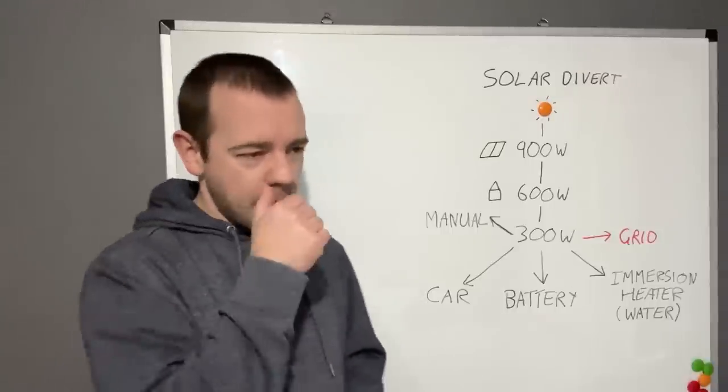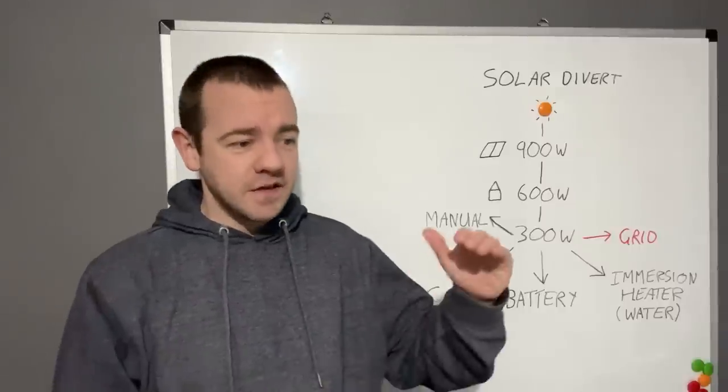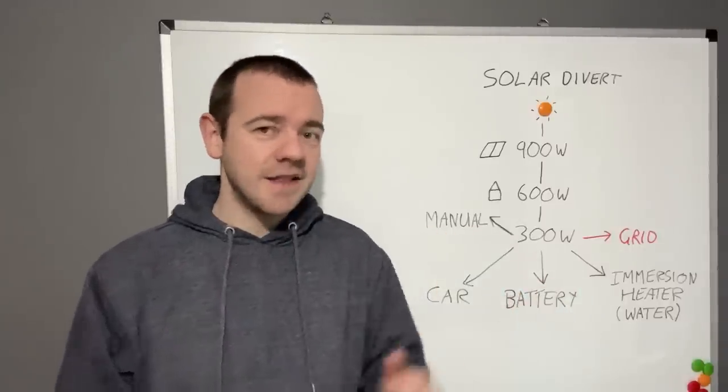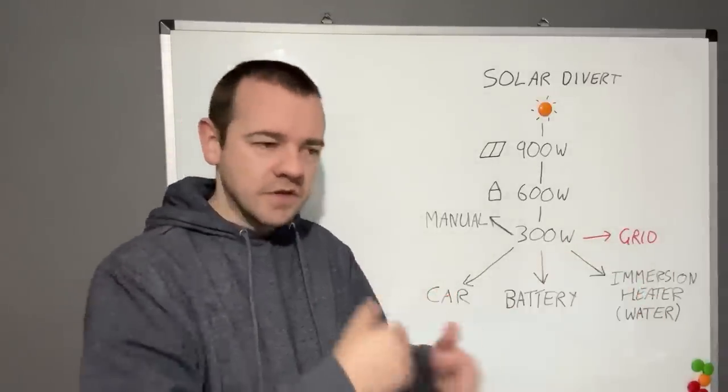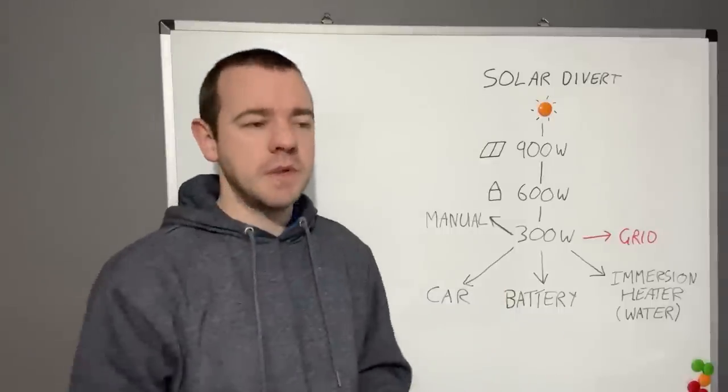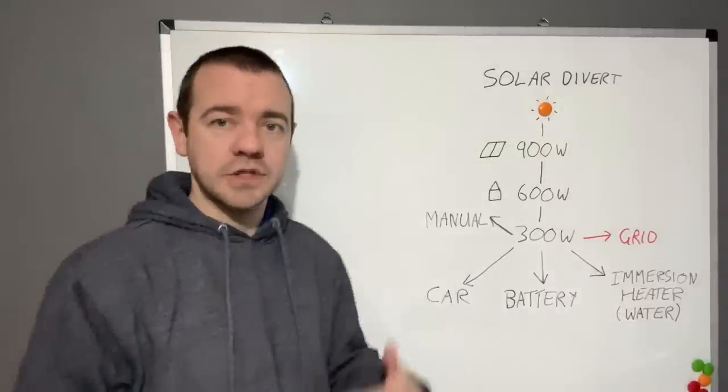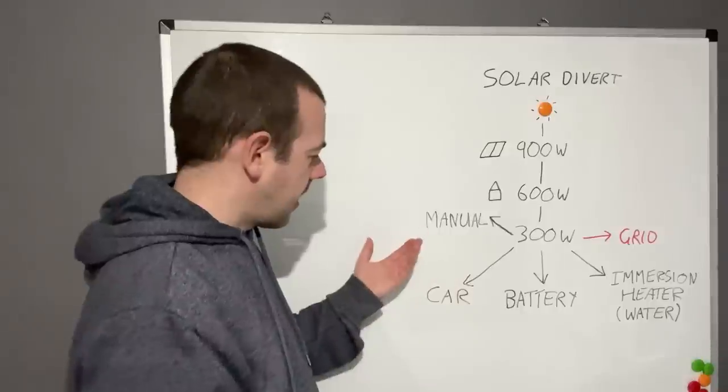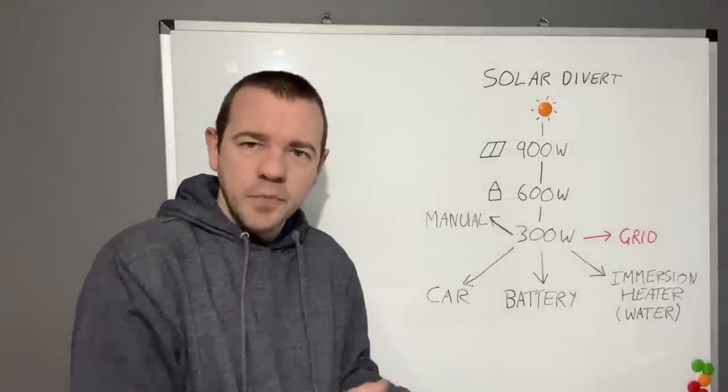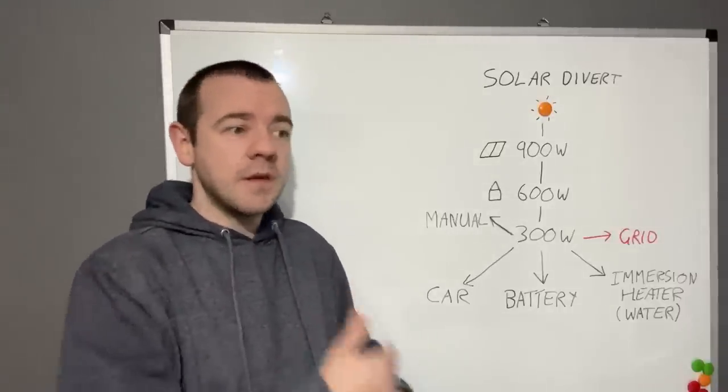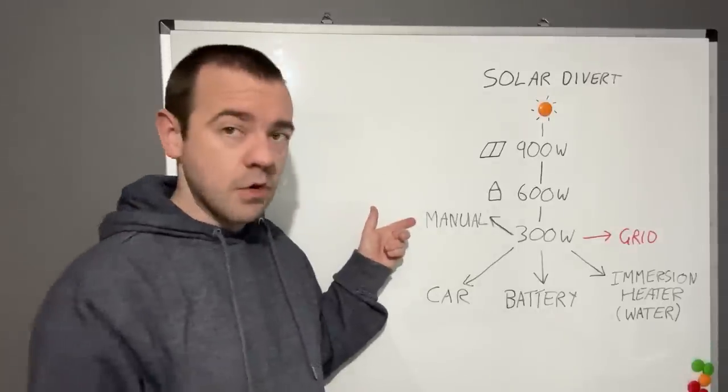But if you wanted to charge something up, I used to do this with my Renault Twizy. If I had a load of solar coming in and the battery was full, I'd start the Twizy charging because it only charged at a very slow rate, and then all that excess solar went into the car. So I was utilizing it in another storage medium. See, that's all these are. A battery stores electrical energy, an immersion heater stores heat, which is essentially energy as well, and manually turning something on is just using it at a more optimal time.